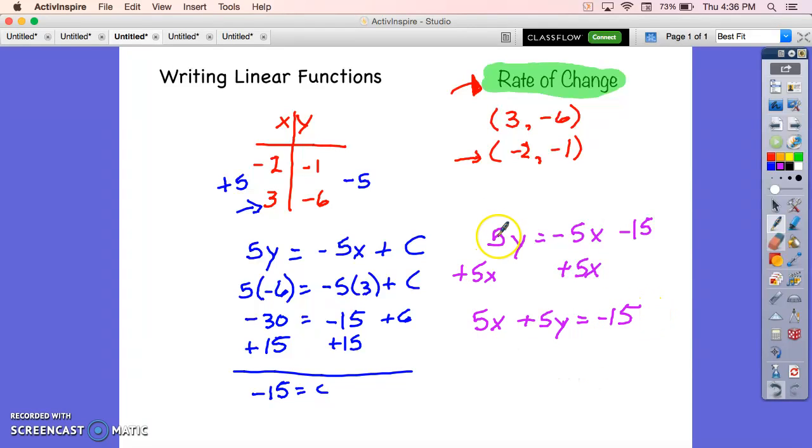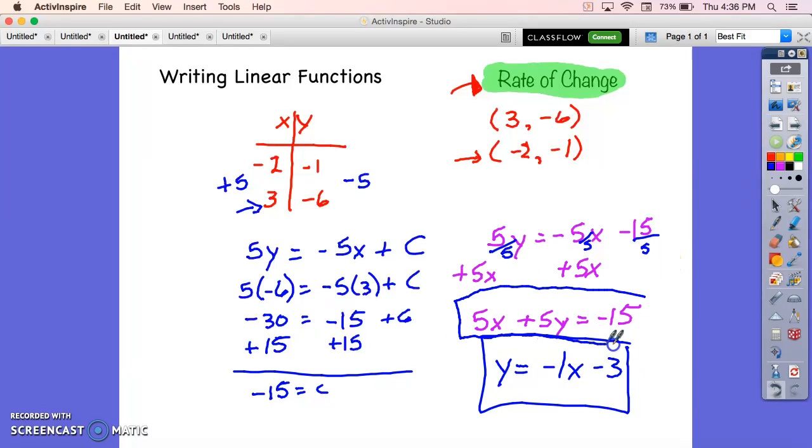I could also leave this alone. What if I wanted this to be in slope intercept? So I'm going to divide everything in this original equation by 5. And I get y equals negative 1x minus 3. Same thing. I would consider either of these to be a very correct form.